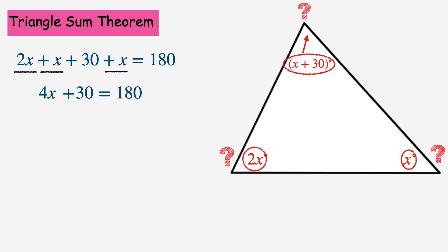Now I need to isolate the 4x on the left side by subtracting 30. And to keep the equation balanced, I need to subtract 30 on the right side as well. The positive 30 and the negative 30 make a zero pair so they cancel each other out, isolating the 4x on the left side. And on the right side, 180 minus 30 is 150.